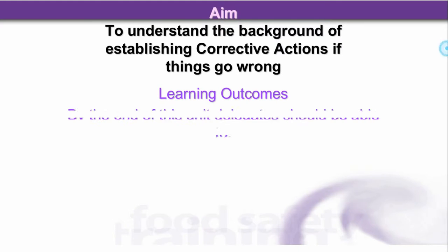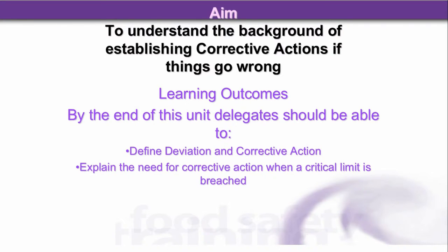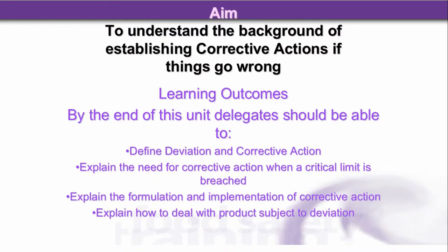Learning outcomes: by the end of this unit, delegates should be able to define deviation and corrective action, explain the need for corrective action when a critical limit is breached, explain the formulation and implementation of corrective action, explain how to deal with product subject to deviation, and explain the need for traceability and recall.